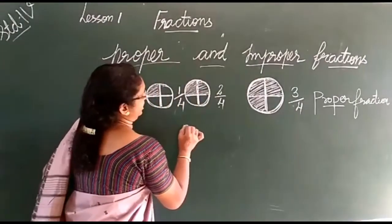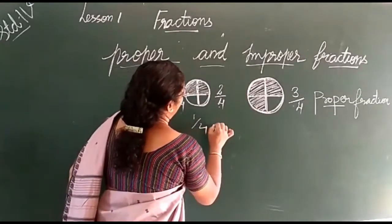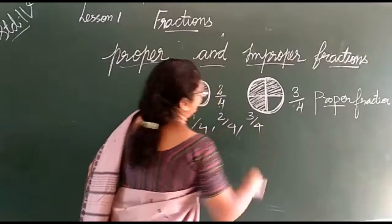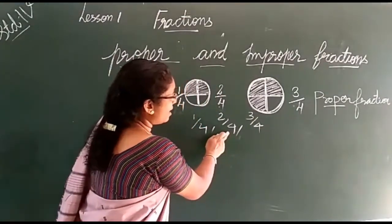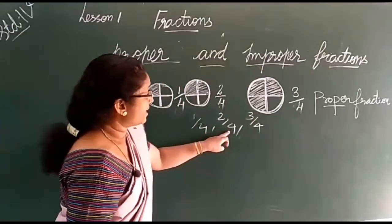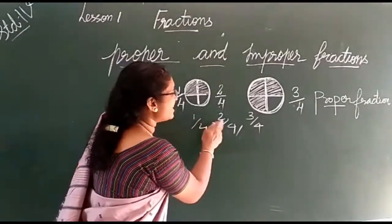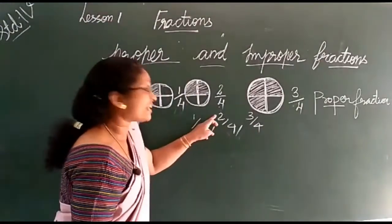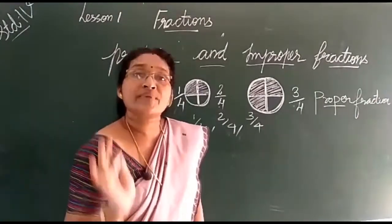The denominator is 1 by 4, 2 by 4, 3 by 4. The denominator is bigger than the numerator — numerator is less than denominator. That is a proper fraction.